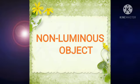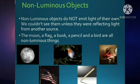N-O-N-L-U-M-I-N-O-U-S non-luminous. O-B-J-E-C-T object. Non-luminous object. An object that does not produce light is called non-luminous object.